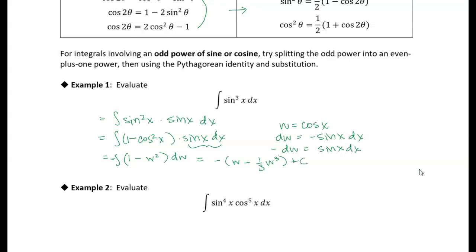And now I just need to replace w and get my final answer. So I'm going to have a negative cosine of x, and I'm going to distribute this negative sign, and then I'm going to have plus one third cosine cubed of x plus c. And that's my final answer, so I'll put a little box around it just to make it clear that that's my final answer.